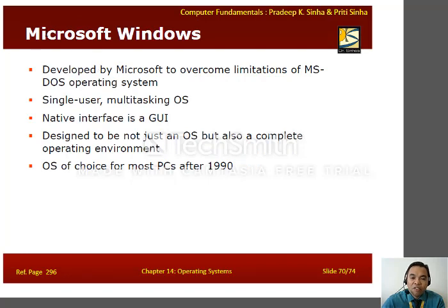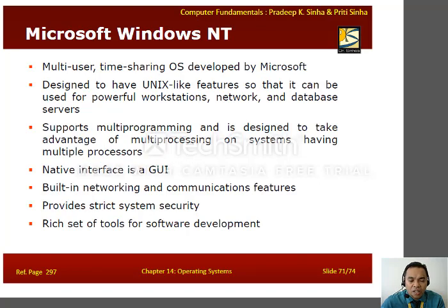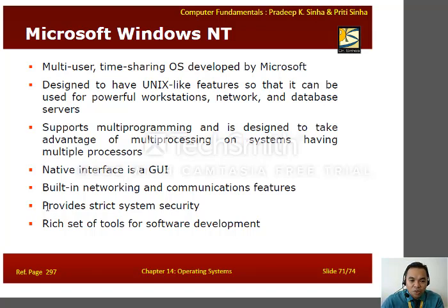Microsoft Windows was developed to overcome the limitations of MS-DOS. It is a single-user but multi-tasking OS with a native GUI interface, designed to be not just an OS but a complete operating environment. Windows NT is a multi-user, time-sharing OS developed by Microsoft with Unix-like features for use on powerful workstations and network database servers, providing strict system security and a rich set of tools for software development.